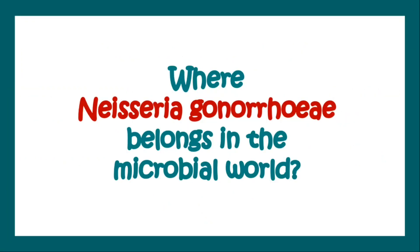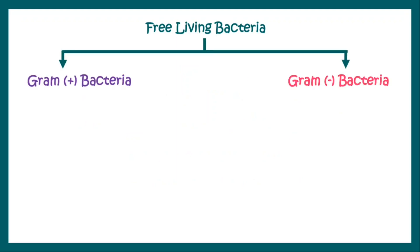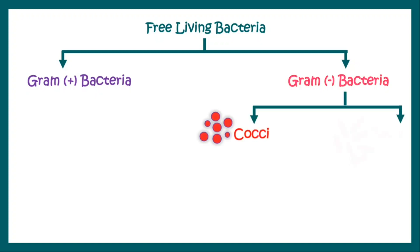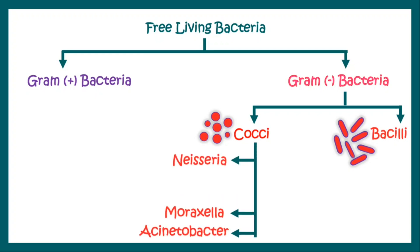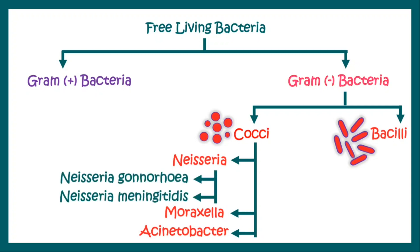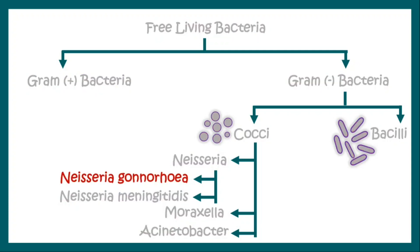Now where does Neisseria gonorrhoeae belong in the microbial world? Among free-living bacteria, organisms can be either gram-positive or gram-negative. Gram-negative bacteria can be gram-negative cocci or gram-negative bacilli. Gram-negative cocci include Neisseria, Moraxella, and Acinetobacter. Within Neisseria, there are two medically important species: Neisseria gonorrhoeae and Neisseria meningitidis. This video focuses on Neisseria gonorrhoeae.